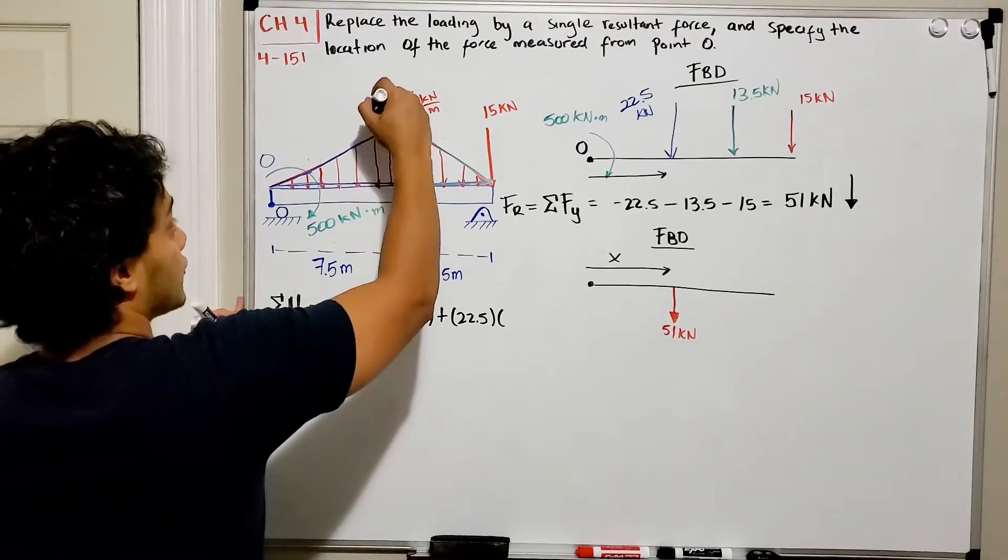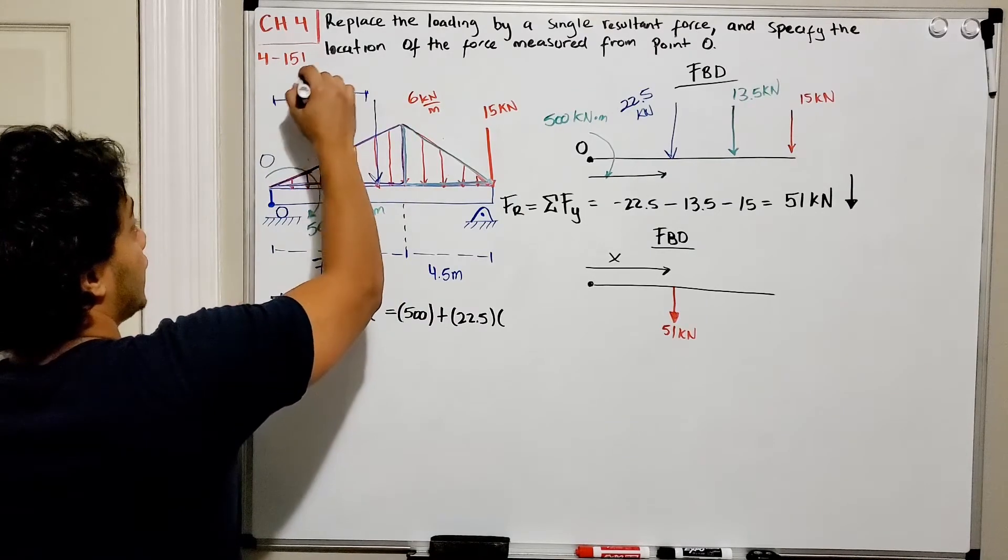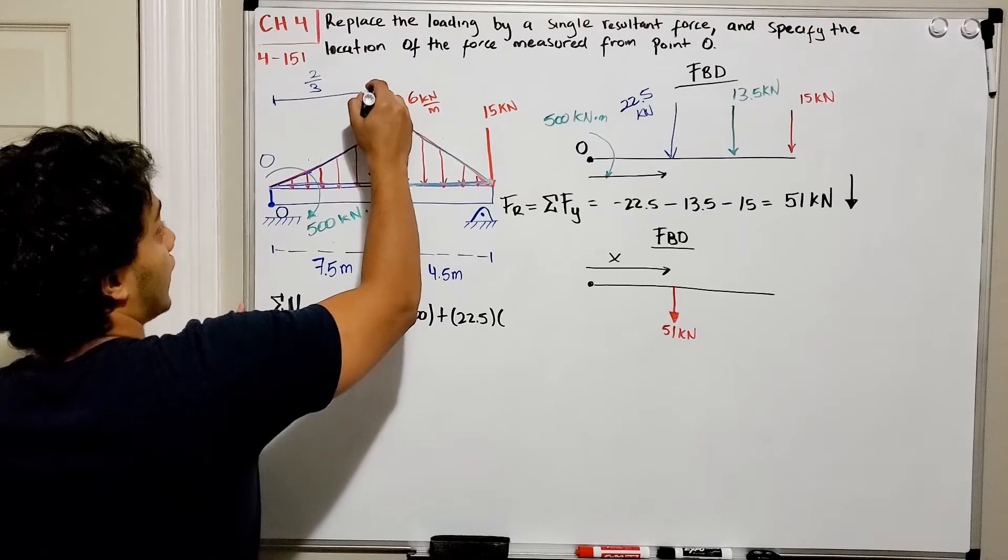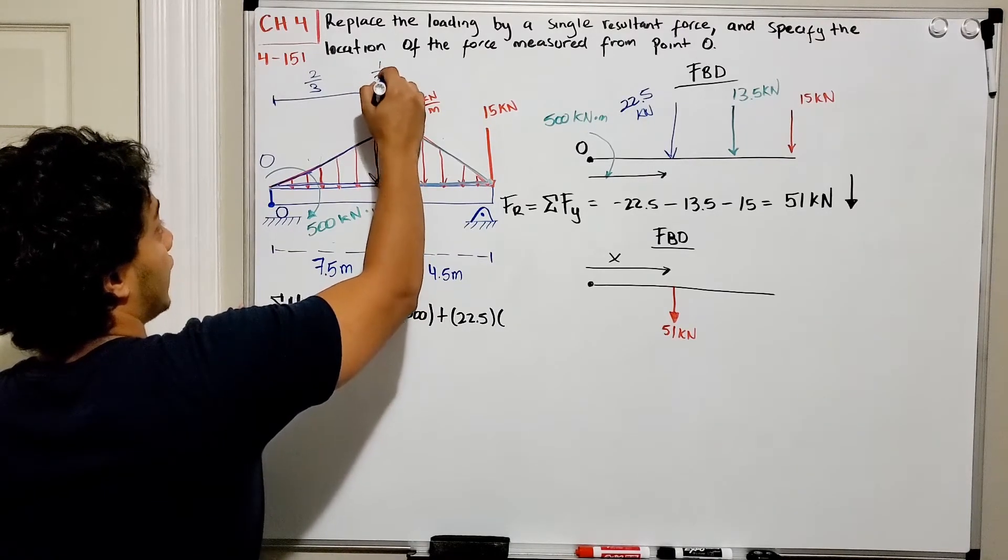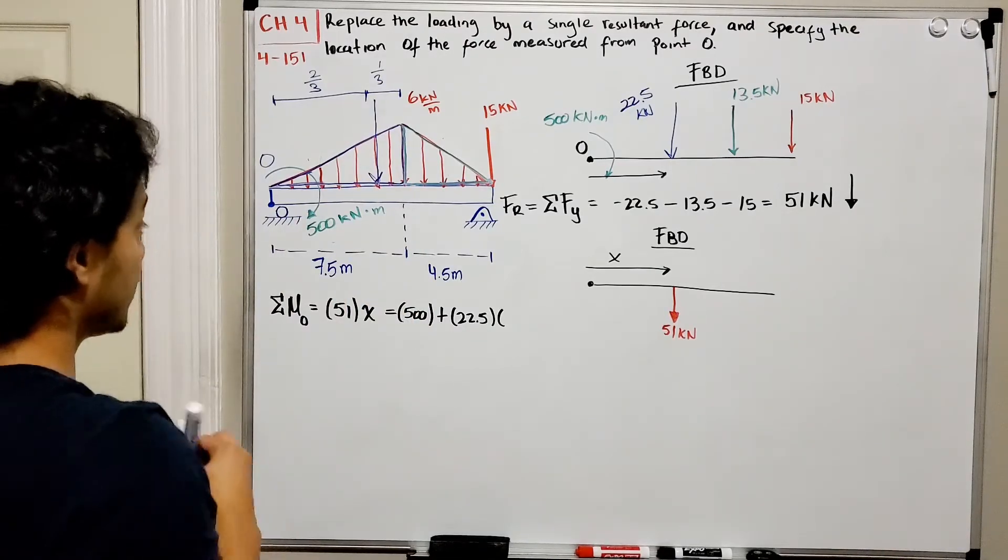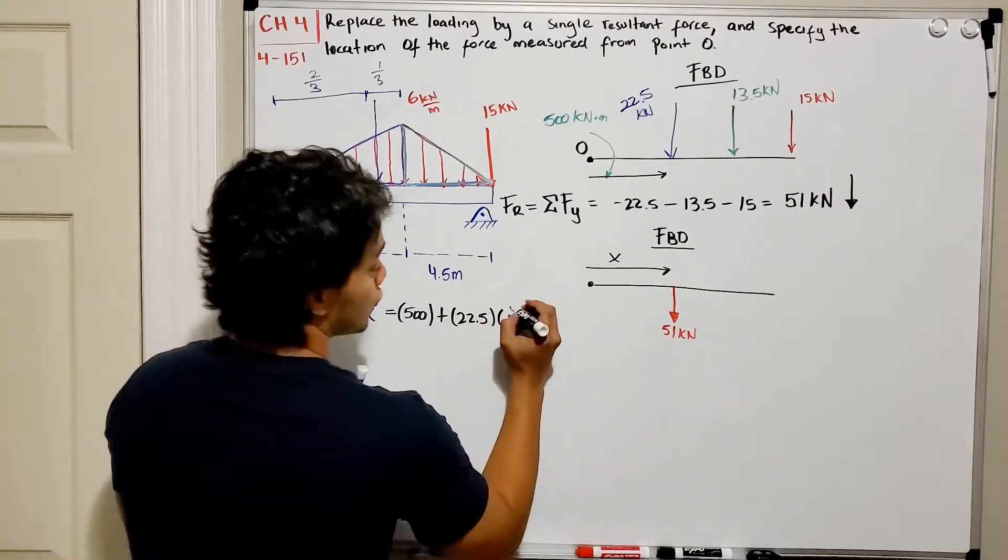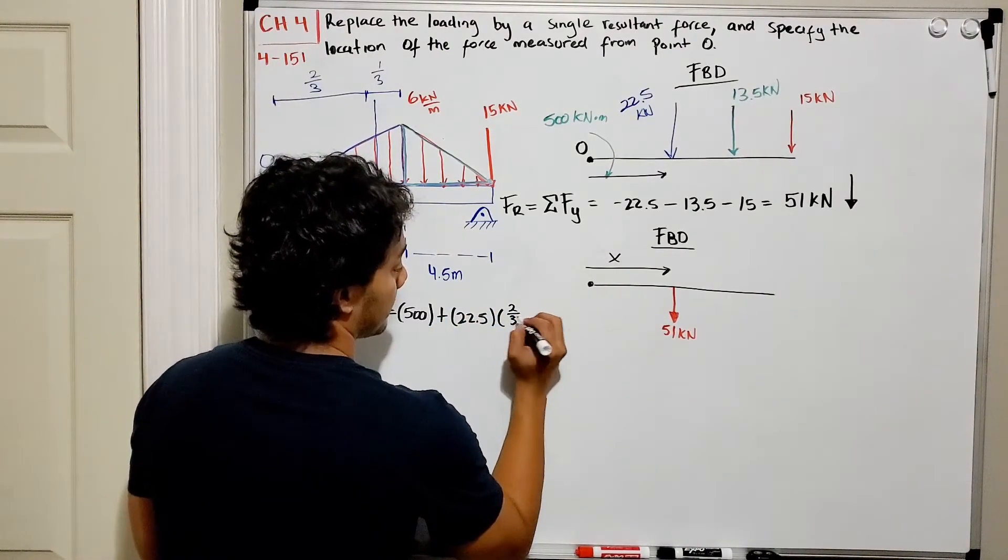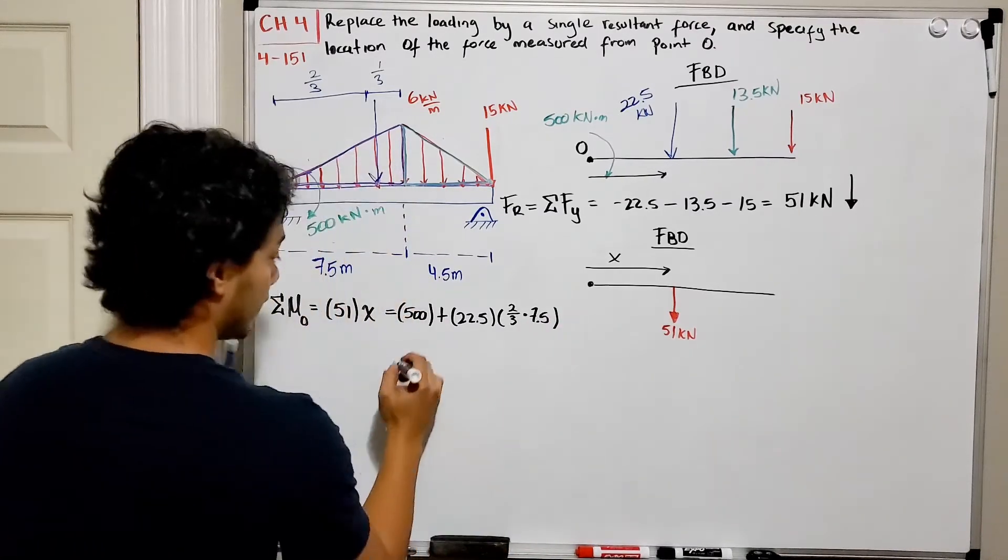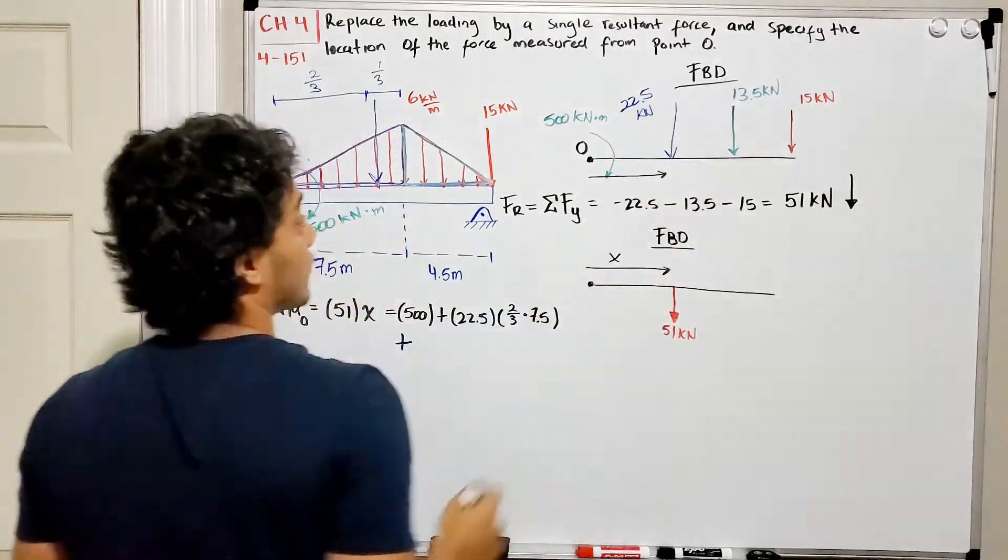Well, what is this distance? We never calculated the distance from here to here. We know that when we take the distribution load for my blue one, my force is gonna be over here where the distance is two-thirds of my whole length. So it will be two-thirds of 7.5.